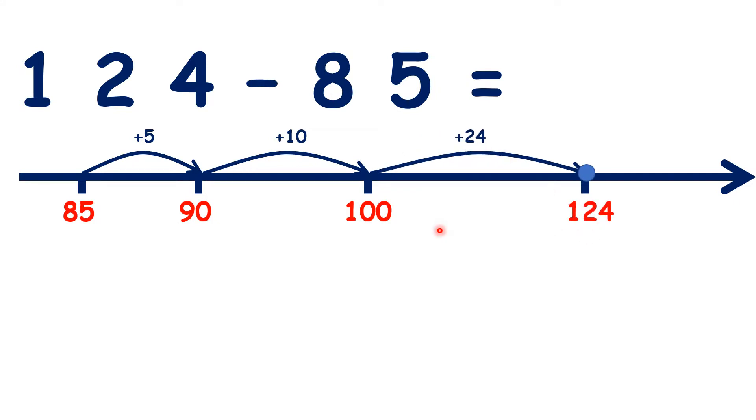So to reach the number we were subtracting from, we had to add 5, then 10, then 24. But I'm going to write that in a slightly different order. So I've written 24 plus 5 plus 10.